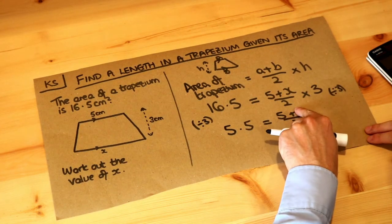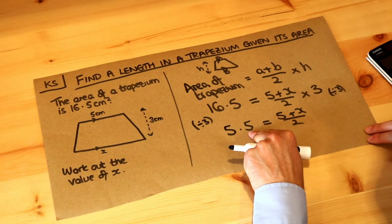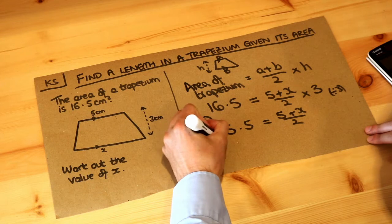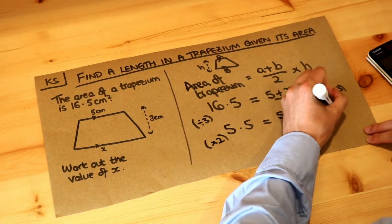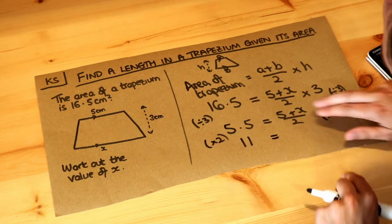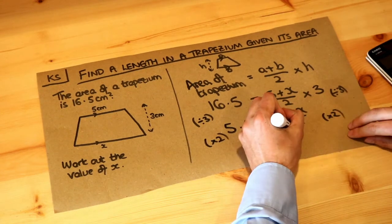Now we've got 5 plus x. That was divided by 2 to get 5.5. So working backwards to get rid of that divide by 2, we multiply both sides by 2. So 5.5 becomes 11. And multiplying this by 2 gets rid of that over 2, leaving just 5 plus x.